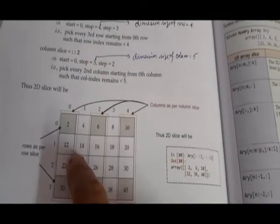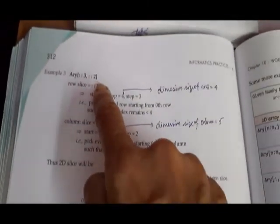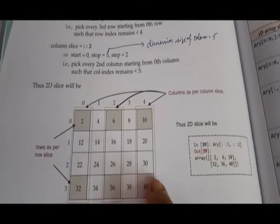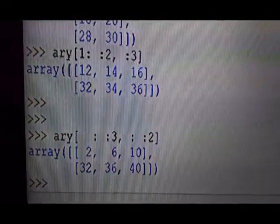So rows 0 and 3 are selected (step 3 from 0 to 3). For columns: 0 to 4 with step 2, so alternate columns. The output is 2, 6, 10 from row 0, and 32, 36, 40 from row 3. I will show you the output.